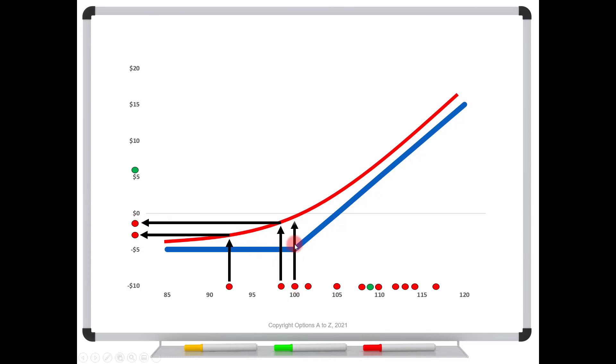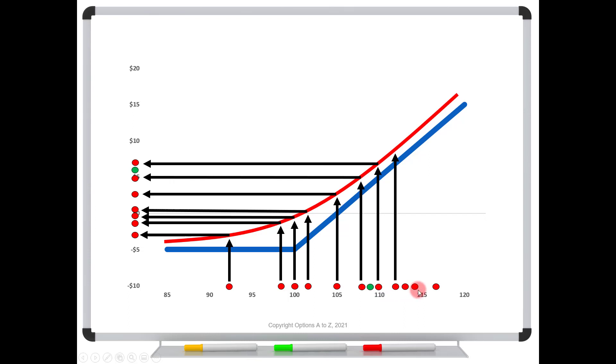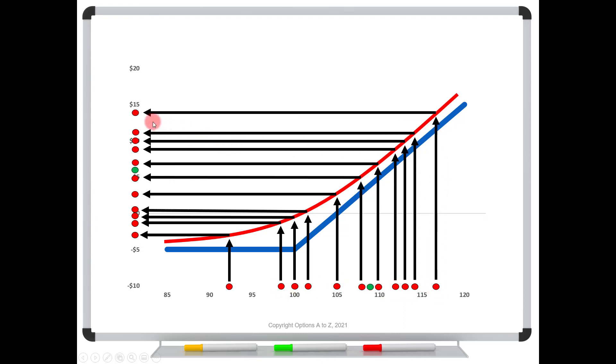We take this third one, feed it into a pricing model. Take the fourth one, feed it into a pricing model. We get all of these different option prices. And we're just going to do this for each stock price that we've chosen. All right. So for each of these red dots, we're going to feed it into a pricing model and come up with various option prices.